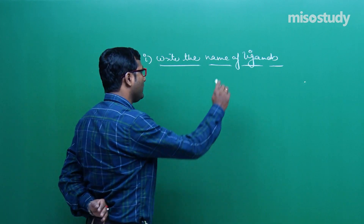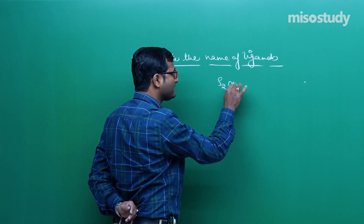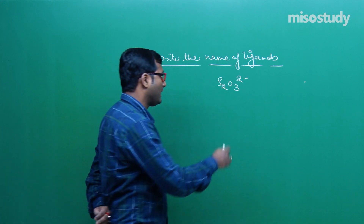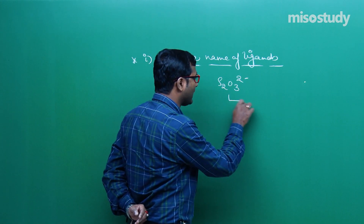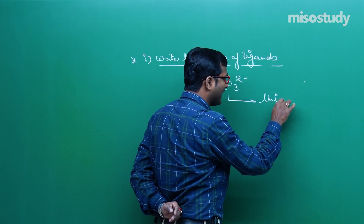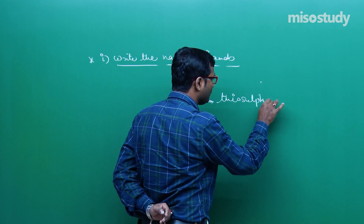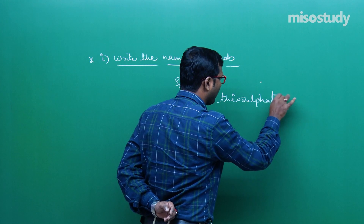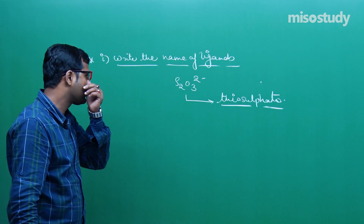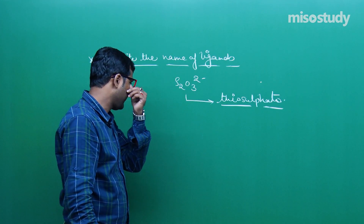In my last class, I was discussing — sometimes there is a missing one, that is H2O3 2 minus. I told you thiooxo — it is better to say thiosulfato, my friend. This is thiosulfate, thiosulfato. Clear to you?